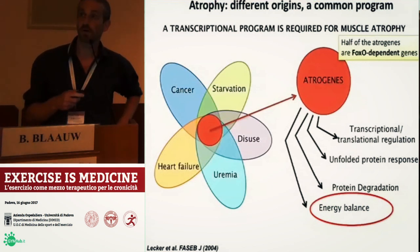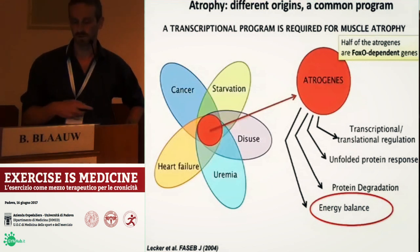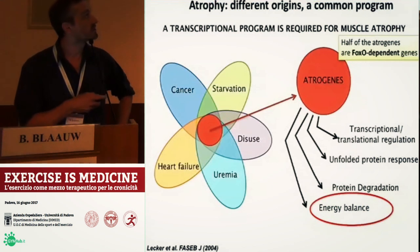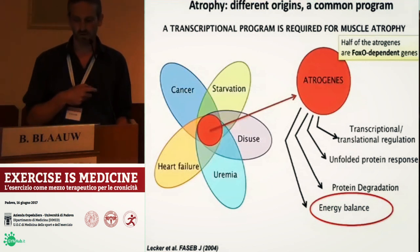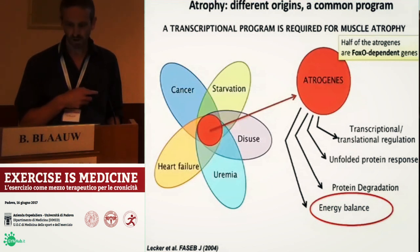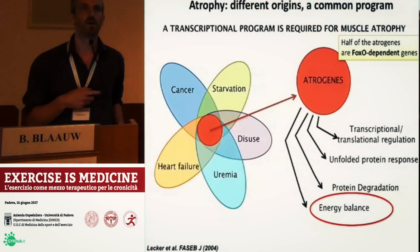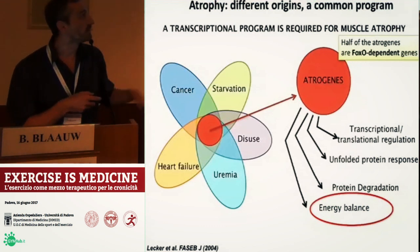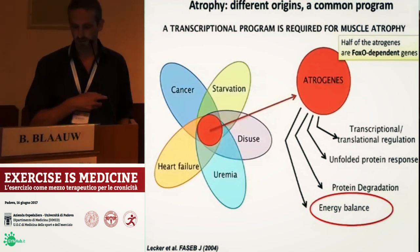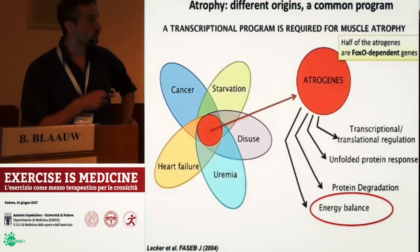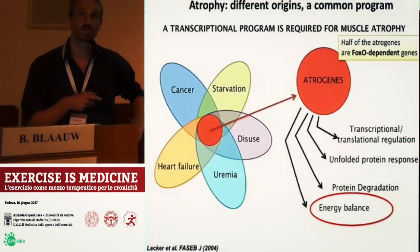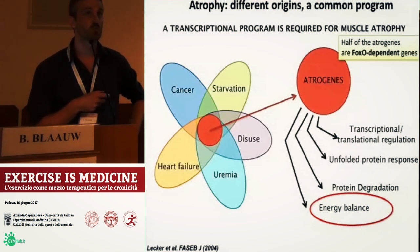An important part of these atrogenes are regulated by the transcription factor FOXO. A lot of work on this has been done by Professor Sandri in Padova. These genes code for many different proteins with different functions in the cells — they can regulate translational processes, parts of the ribosome, and they can induce an unfolded protein response, which is a stress response in the cell. They are linked to protein degradation through two different systems: the autophagy-lysosome system, which degrades cellular components, and the ubiquitin-proteasome system, which tags and degrades proteins.